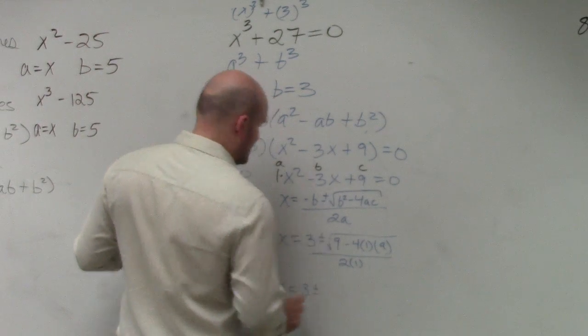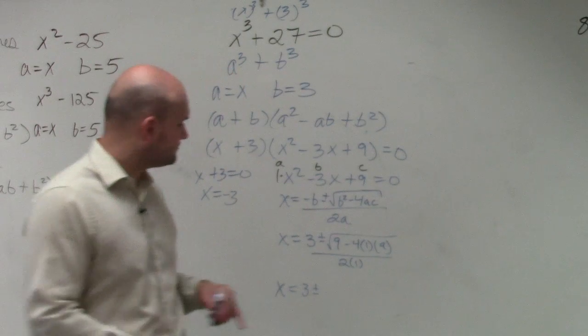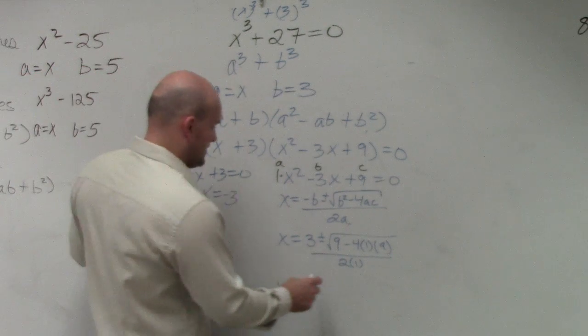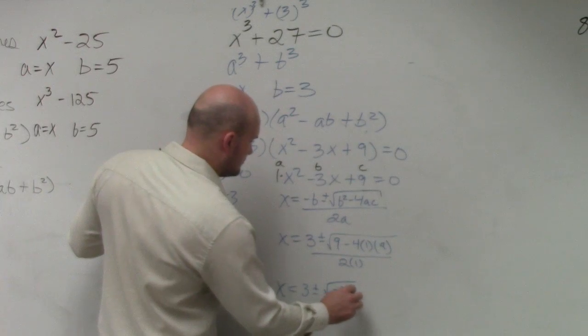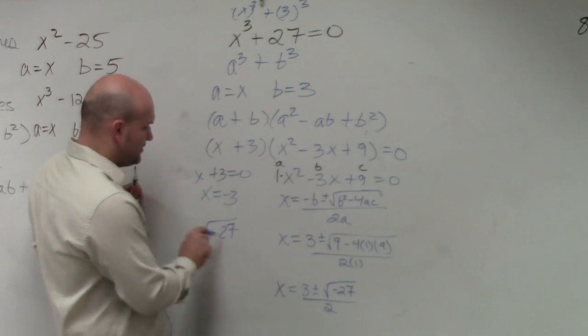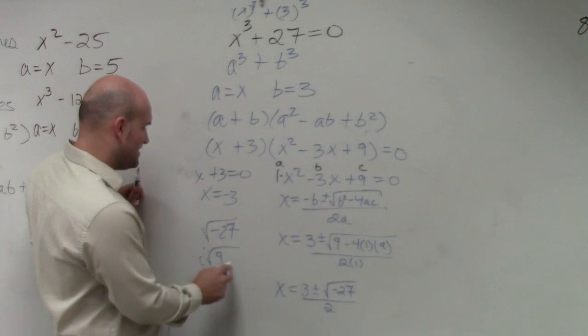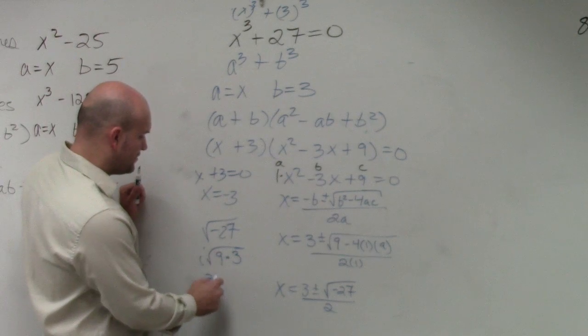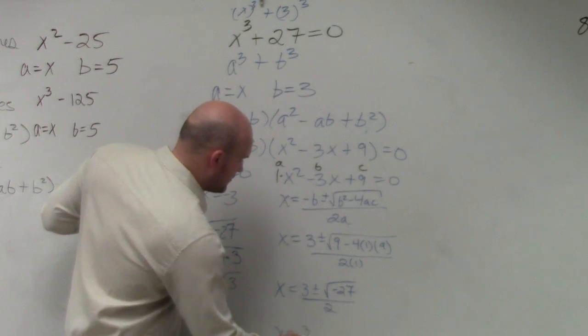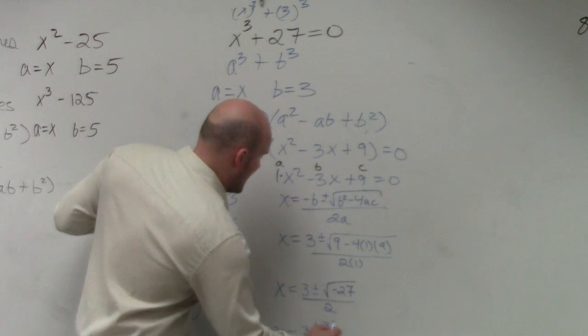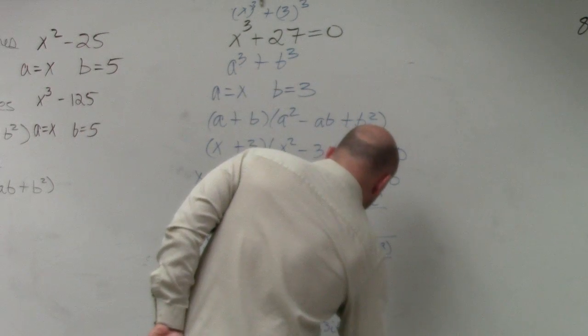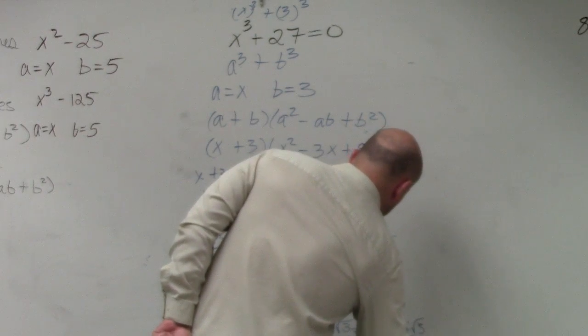So x equals 3 plus or minus, let's see, negative 4 times 9 is going to be negative 36. So negative 36 plus 9 is going to be negative 27 divided by 2. Remember the square root of negative 27? You can take out the negative 1 and write that as an i. You could also break out the 27 as the square root of 9 times 3. The square root of 9 is 3, so we can rewrite that as 3i times the square root of 3. So my final answer, I can write as x equals 3 plus or minus 3i times the square root of 3 divided by 2, or we could also break that up and write 3 halves plus or minus 3i times the square root of 3 over 2.